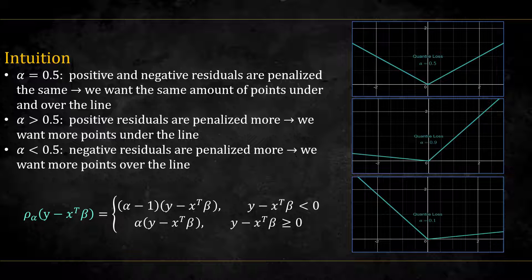The exact balance between these lines, controlled by alpha, give rise to the different quantiles. I hope this gave you an intuition as to why the quantile loss works.